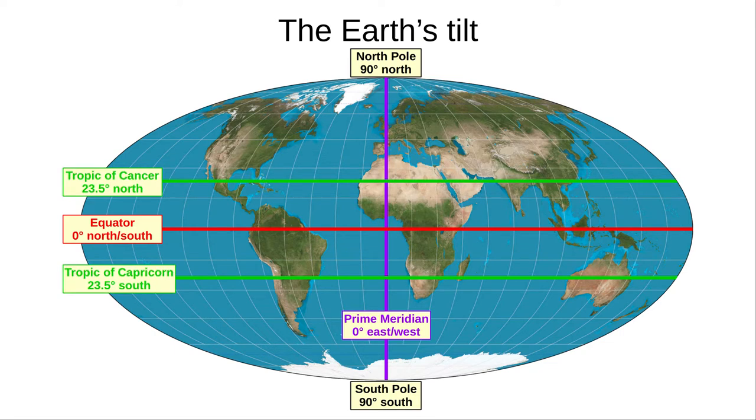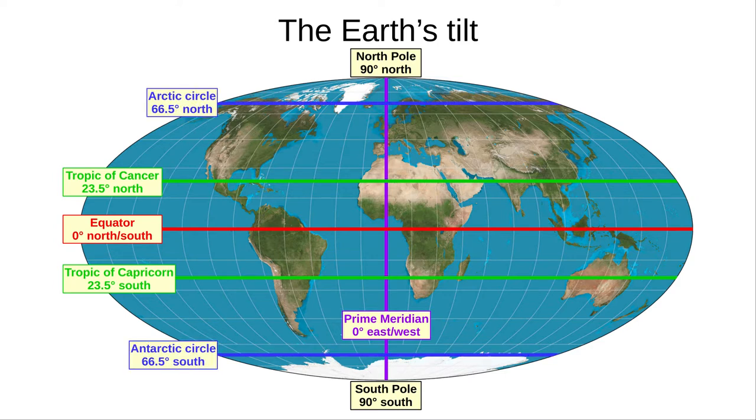At 23.5 degrees north and south are the tropics. 23.5 degrees north is the Tropic of Cancer, and 23.5 degrees south is the Tropic of Capricorn. If you forget which way round they go, it's easy. They go in alphabetical order. At 66.5 degrees north is the Arctic Circle, and at 66.5 degrees south is the Antarctic Circle.